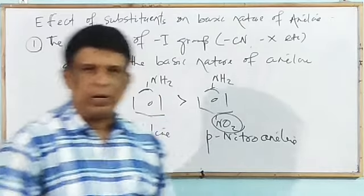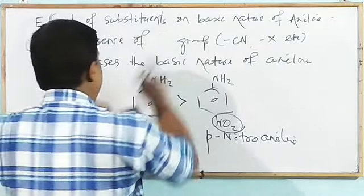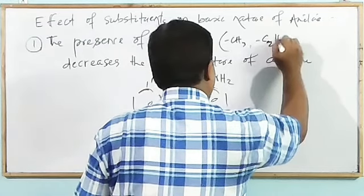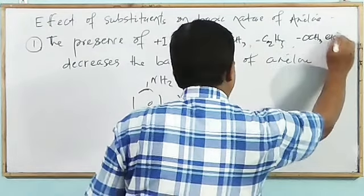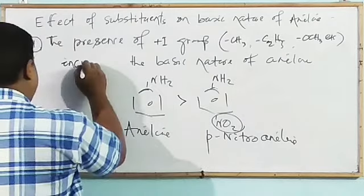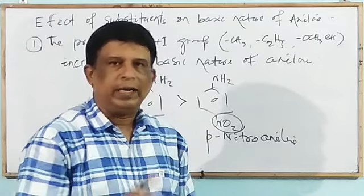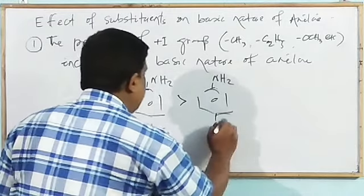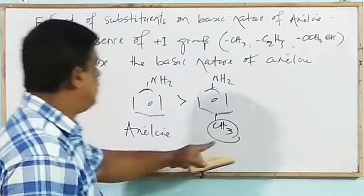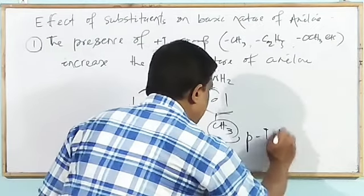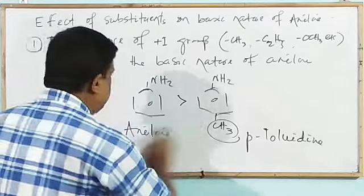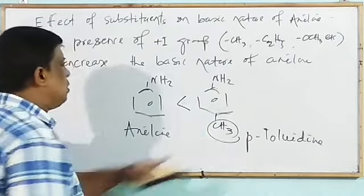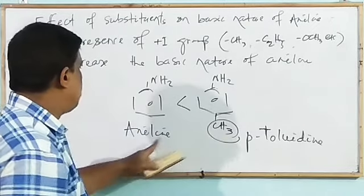Point 2: the presence of +I groups — electron donating groups (EDG) such as CH₃, C₂H₅, OCH₃, etc. — increases the basic nature of aniline. For example, if we select a +I group that is methyl group (giving p-toluidine), as it is a +I group, it increases electron density and increases basic nature. So p-toluidine is a stronger base than aniline.